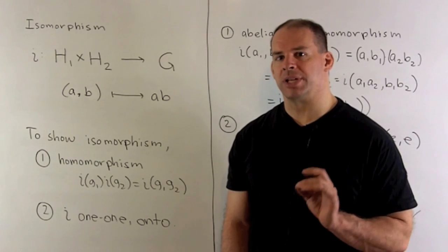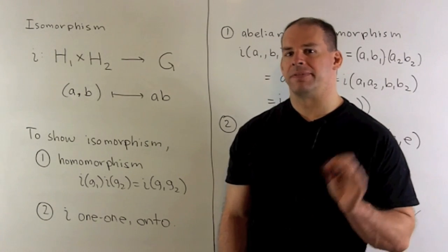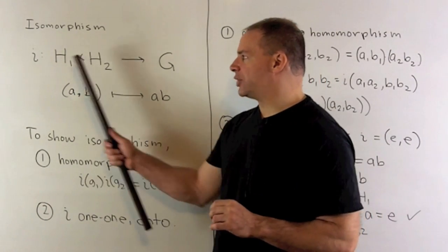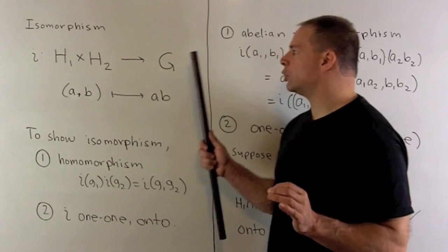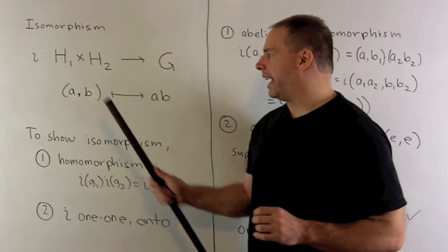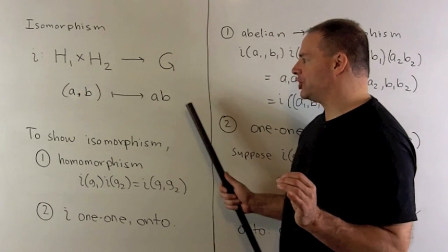With the subgroups H1 and H2, we can define our isomorphism i. So i is going to carry the product of H1 with H2 into our group G. We send the pair (a,b) to the product in G.